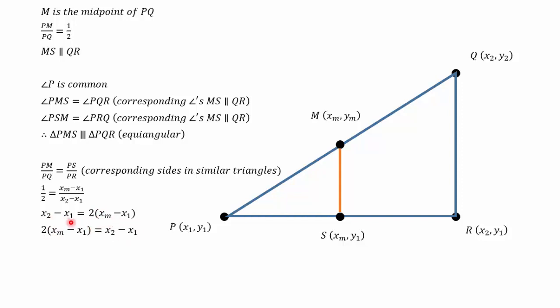Just swap the sides because I want my xm to be on the left-hand side because ultimately this will be the subject of my formula. Expand the brackets. 2xm minus 2x1 equals x2 minus x1. Bring the 2x1 to the other side. Minus 1 plus 2 equals plus 1. Divide by 2. And I've got my value for xm.